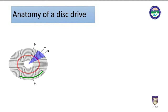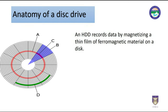A hard disk records data by magnetizing a thin film of ferromagnetic material on a disk. Sequential changes in the direction of magnetization represent binary data as bits. The data is read from the disk by detecting transitions in the magnetization. User data is encoded using an encoding scheme such as run-length limited encoding, which determines how the data is represented by the magnetic transitions.